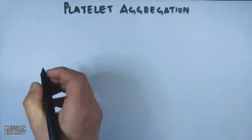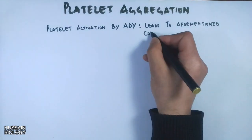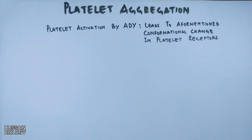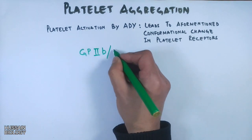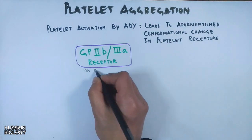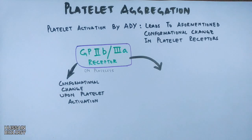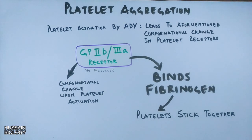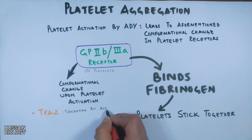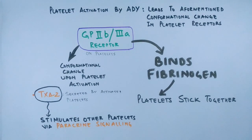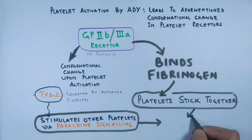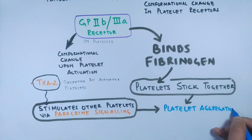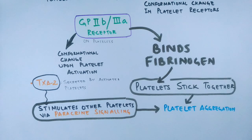After all these steps we have platelet aggregation, which finally plugs the vessel. Platelet activation by ADP leads to activation of the GP2b/3a receptor. This receptor binds fibrinogen, causing platelets to stick together. TXA2 further activates more platelets via paracrine signaling, ultimately leading to platelet aggregation and plugging of the damaged vessel.